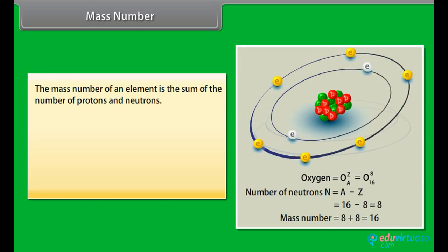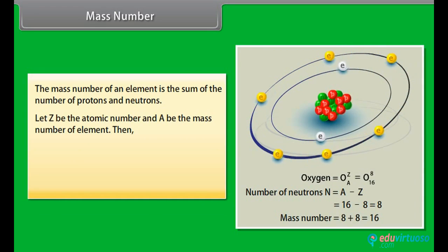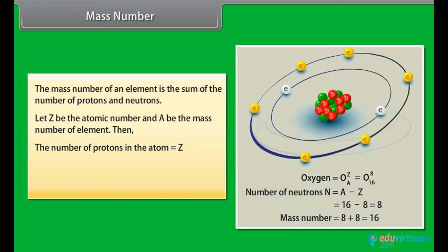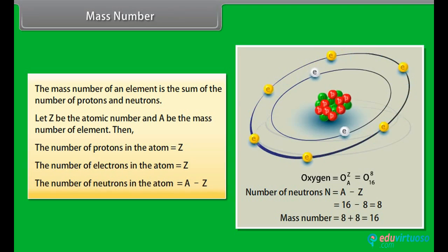Mass Number. The mass number of an element is the sum of the number of protons and neutrons. Let Z be the atomic number and A be the mass number of element. Then the number of protons in the atom is equal to Z. The number of electrons in the atom is equal to Z. The number of neutrons in the atom is equal to A minus Z.